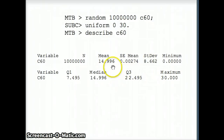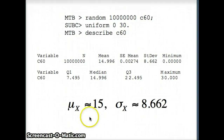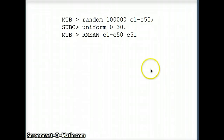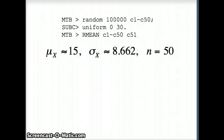We get x-bar of 14.996 and s of 8.662. Since the data set is so large, the statistics should be good approximations of the parameters. For a uniform 0 to 30, we'd expect the mean to be 15. So the mean of x is about 15, and the standard deviation of x is about 8.662. With N = 50, those values correspond to the uniform 0 to 30 and the fact that we used 50 numbers to construct each average.